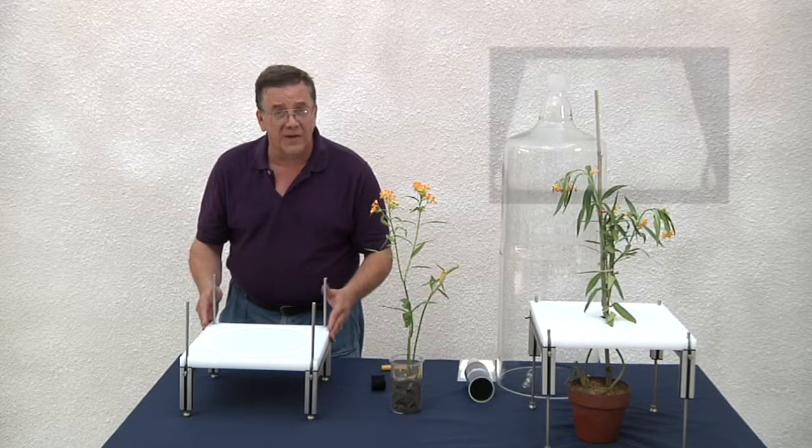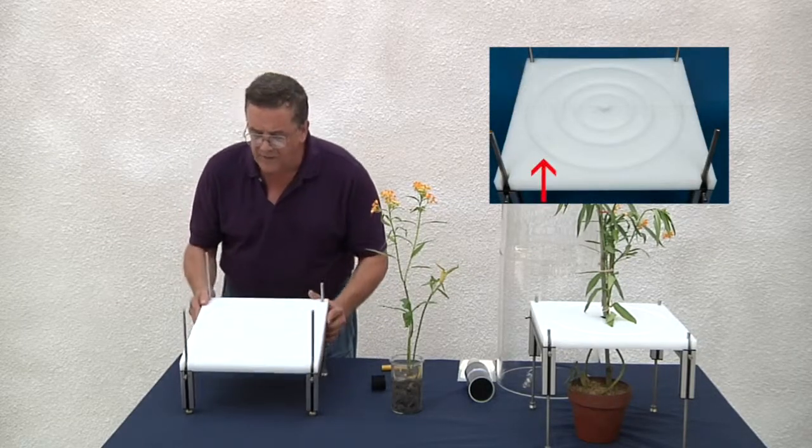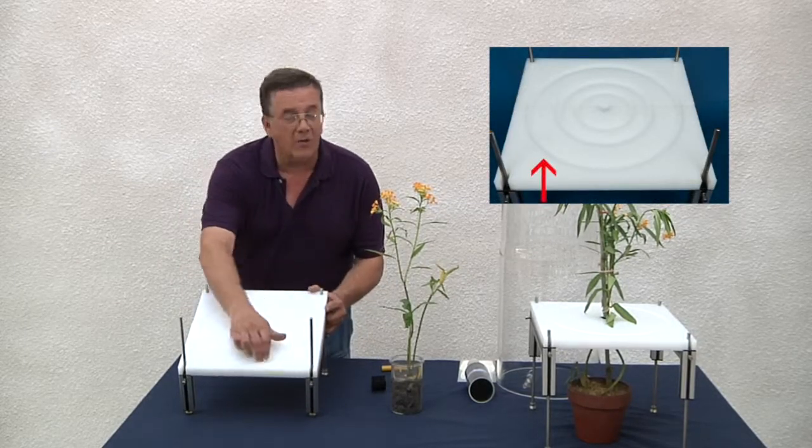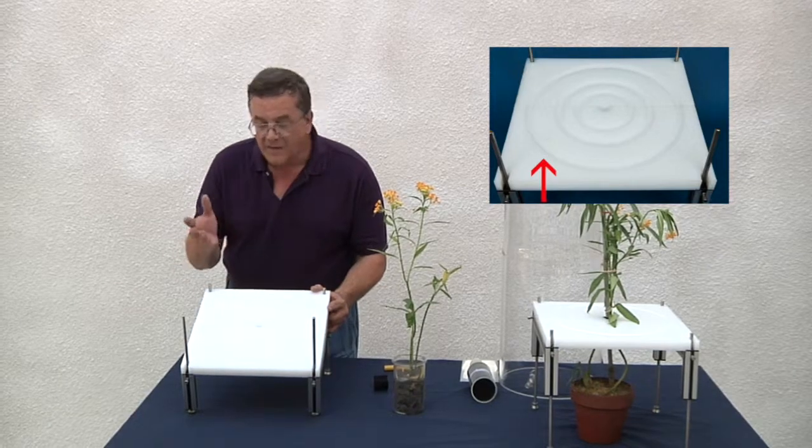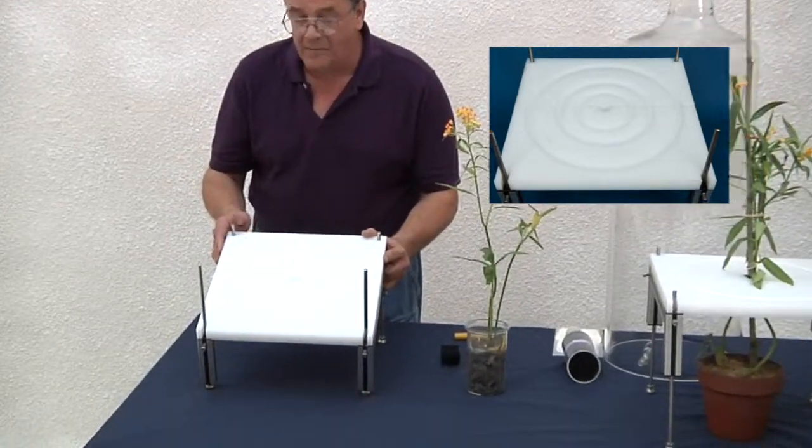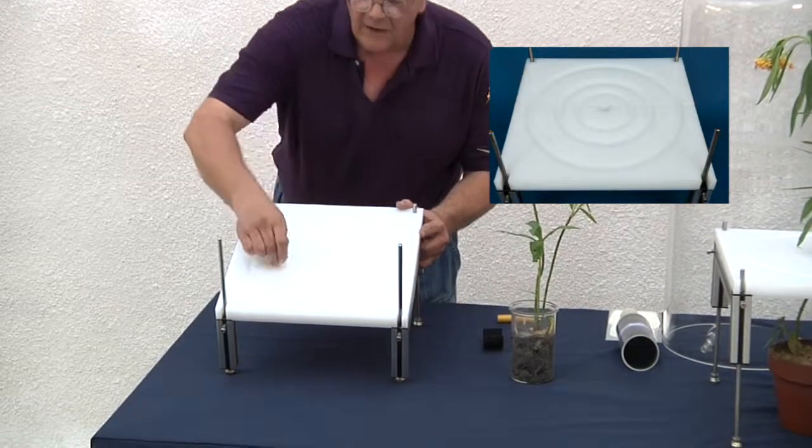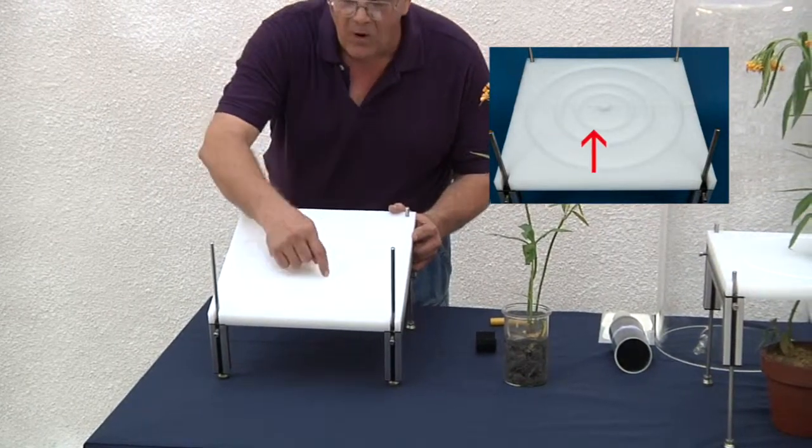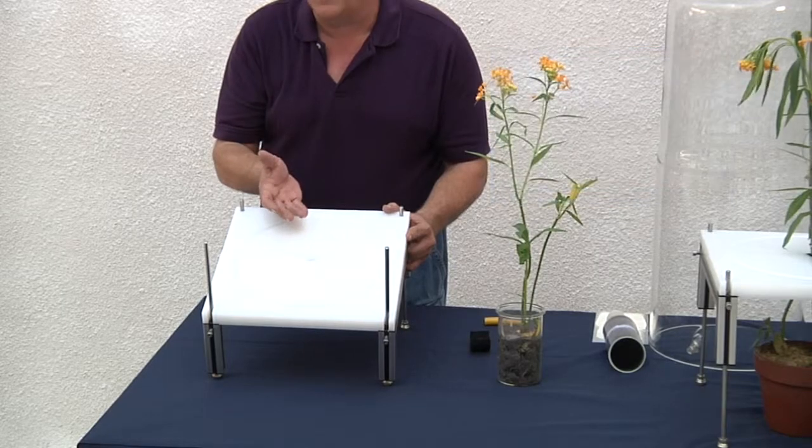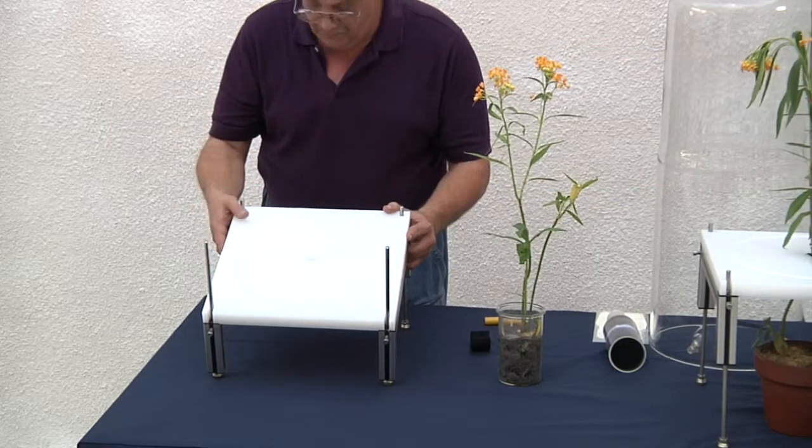This is our large stand. It has a 300 millimeter ring for our large glass chambers. The nice thing about our large table is we can also cut in a 200 millimeter ring and a 100 millimeter ring so you could use the same table for different glass chambers.